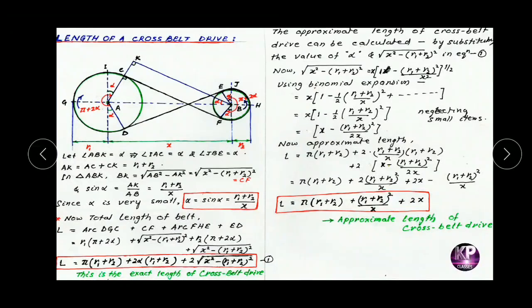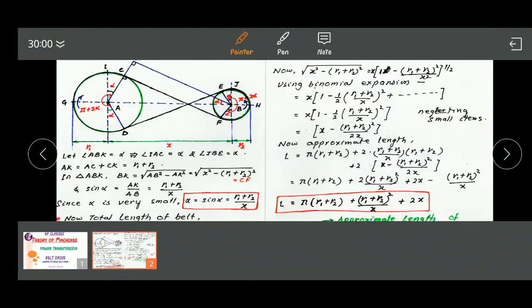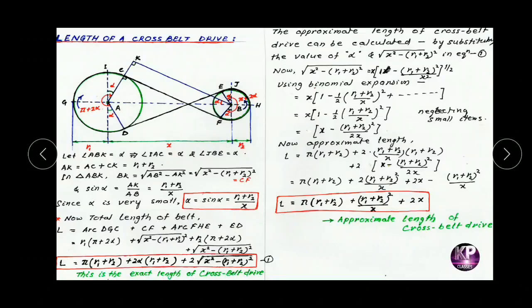Now, the total length of the belt equals arc DGC plus CF plus arc FHE plus ED. The length of arc DGC equals radius into angle subtended by the arc. Here radius equals R1 and the angle subtended at the center equals pi plus 2 alpha. In case of cross belt drive, in both pulleys the angle of contact is equal to pi plus 2 alpha radians, whereas in open belt drive the driver has pi plus 2 alpha and the smaller pulley has pi minus 2 alpha.